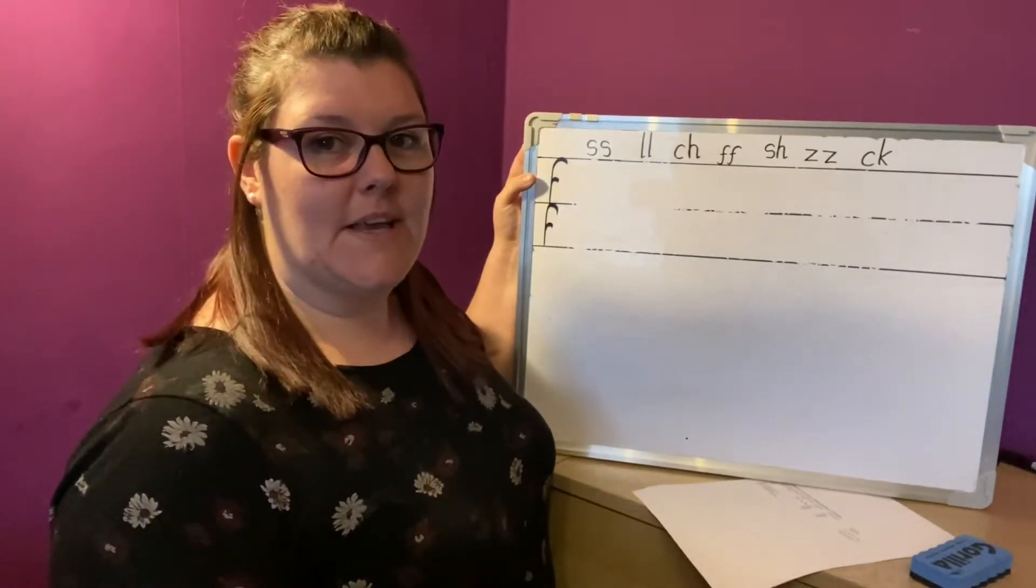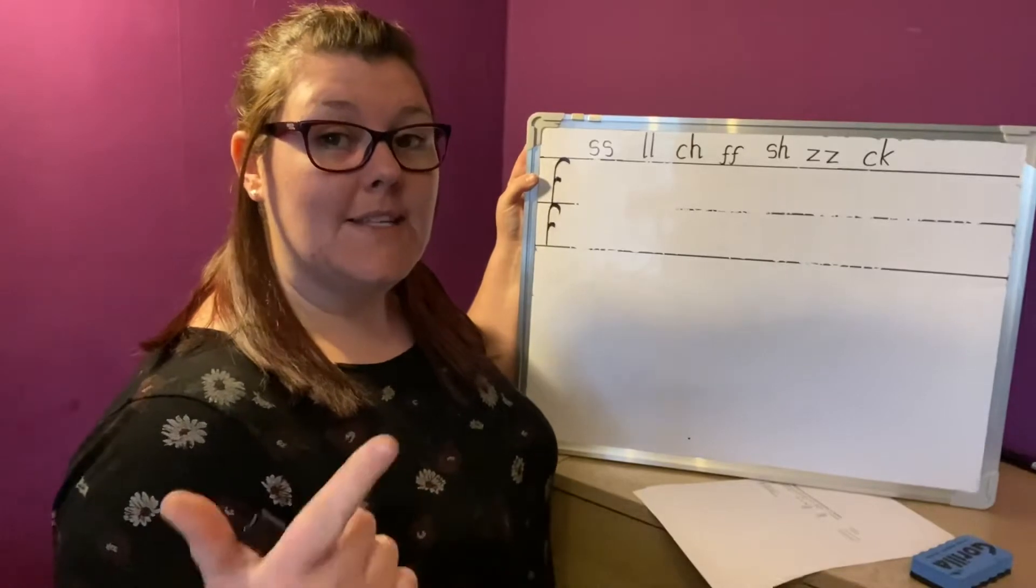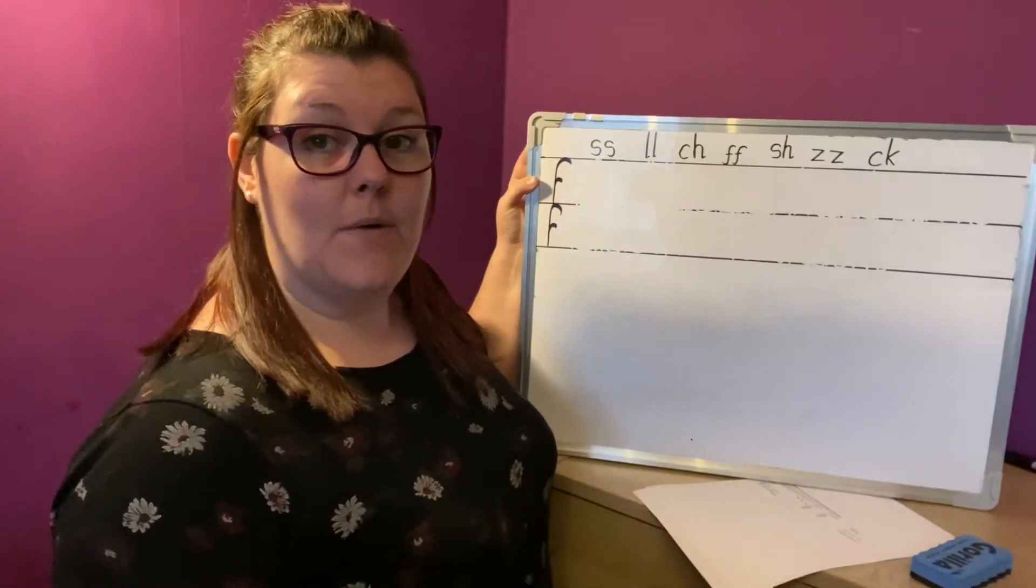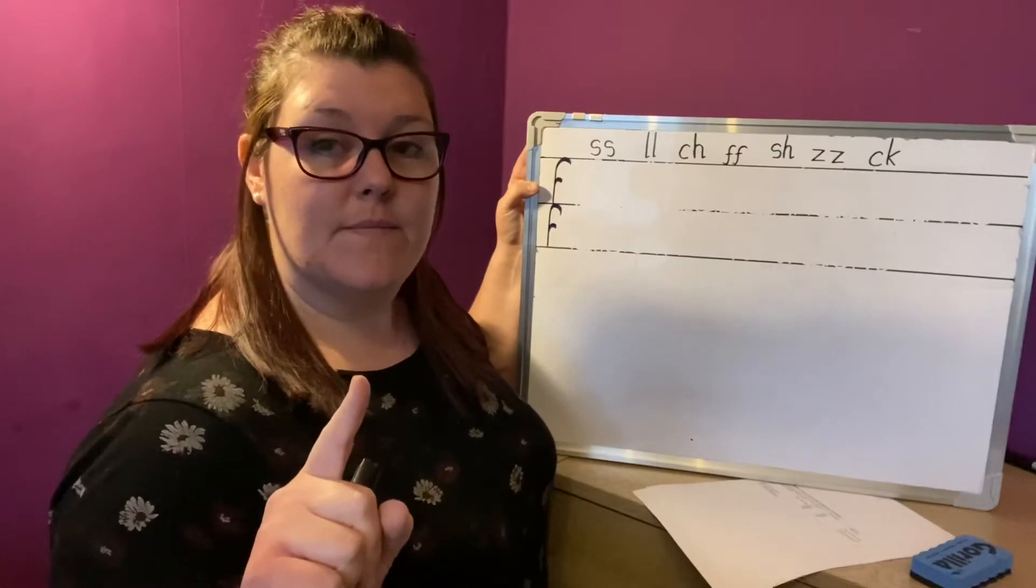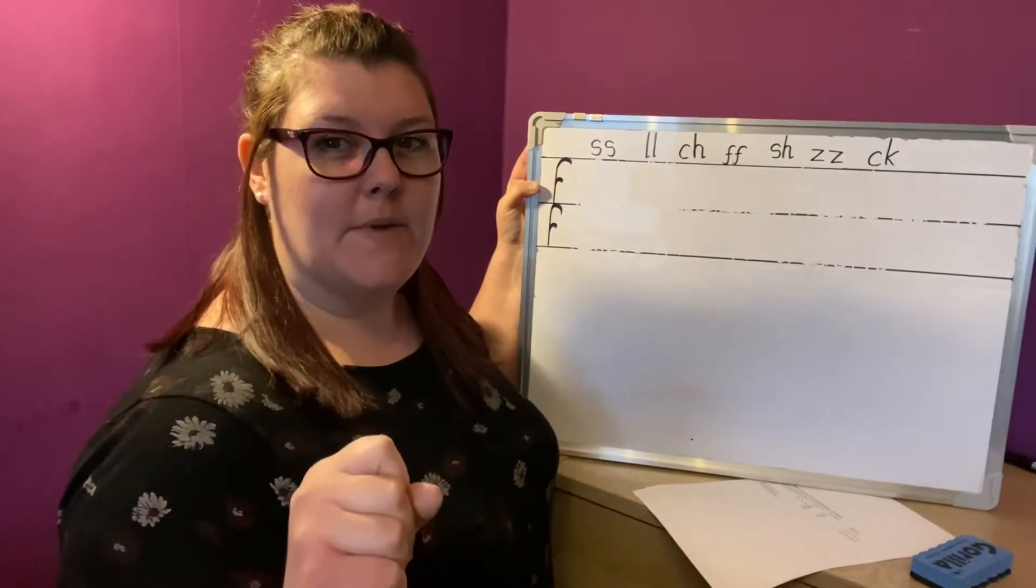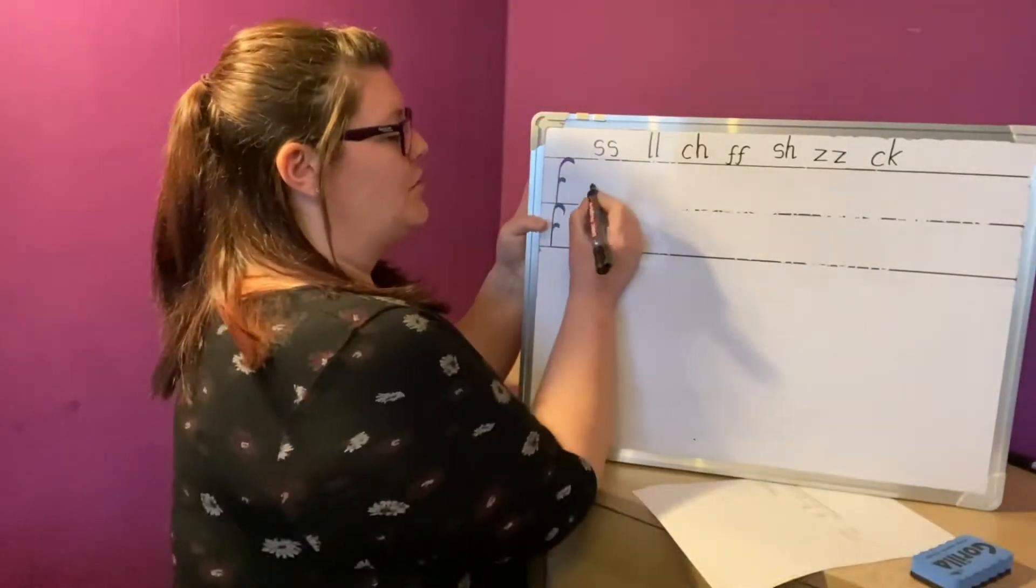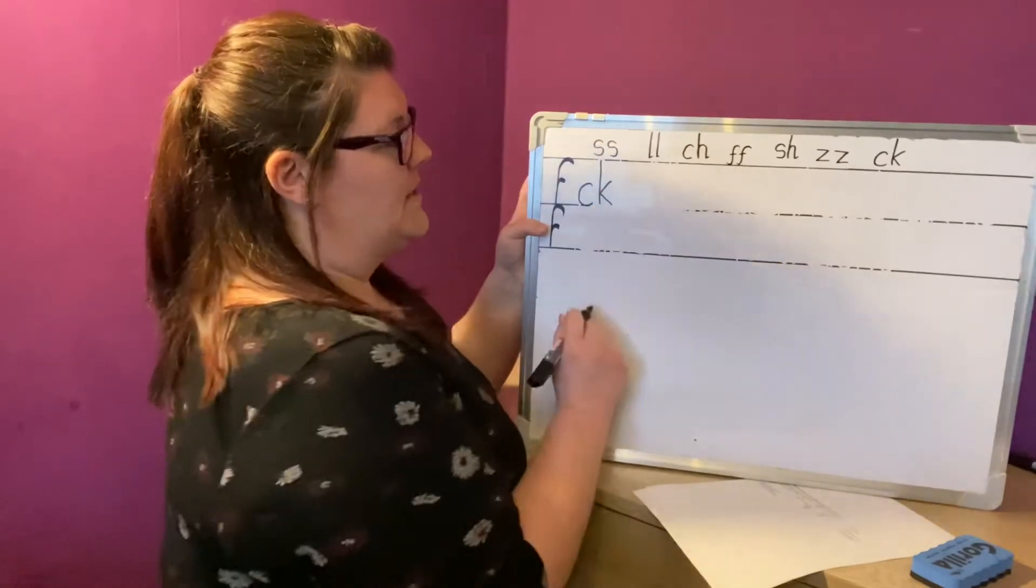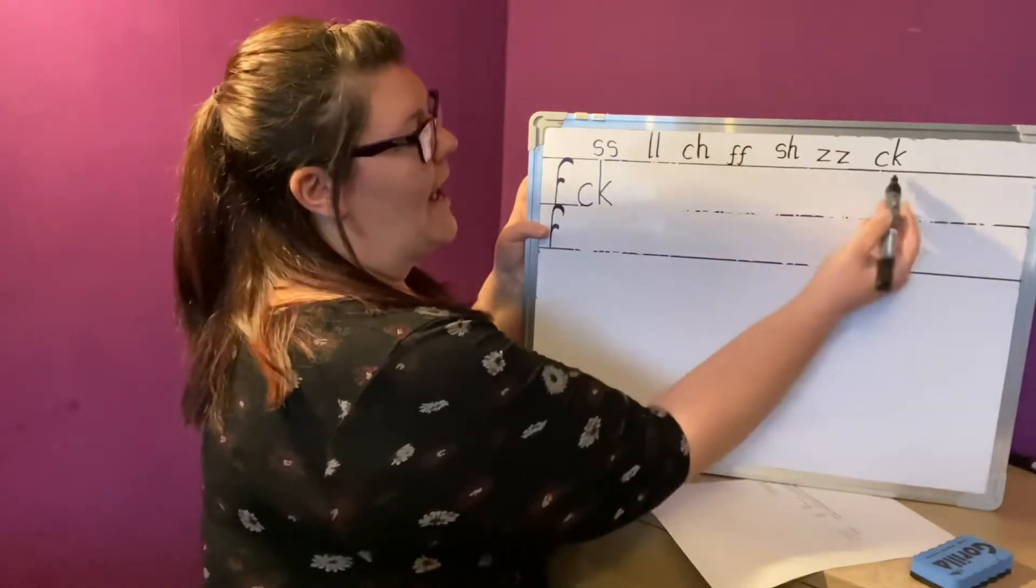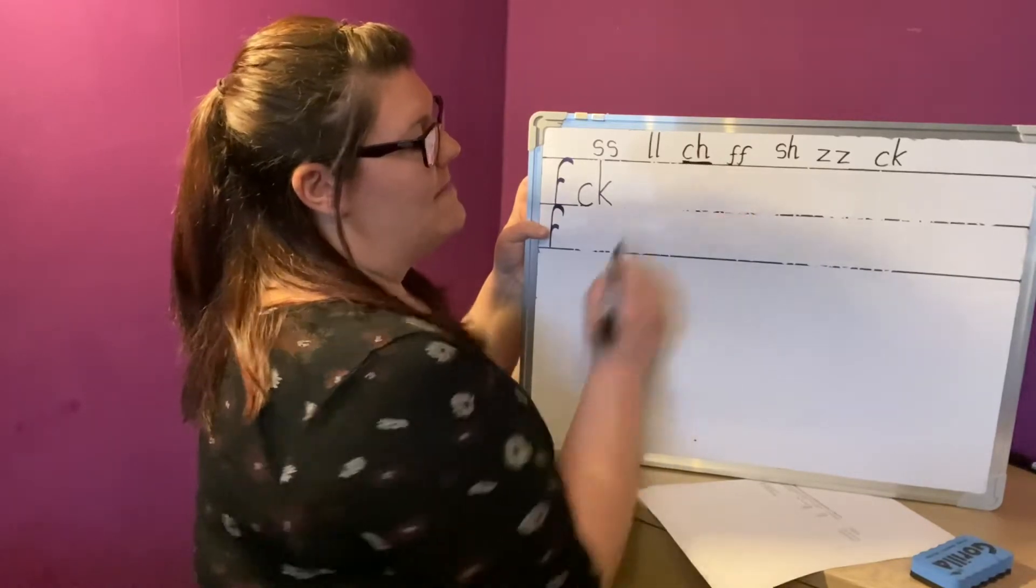Yesterday we practiced writing the sh and the ch sound. Today I want you to have a go at writing the two letters, one sound, ck. Can you remember how we do it? It's the short c first and then the tall k. Because in ch, sh, and ck, it's always the short letter first and then the tall one.